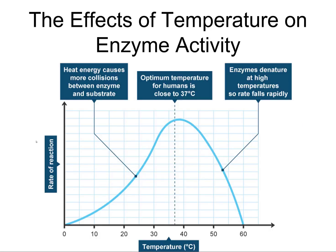Enzymes are like that. The heat energy causes more collisions — the frequency of the enzyme meeting with the substrate gets higher and higher. The molecules are moving around; I equate that with shaking, where molecules of water bump around. As temperature goes higher, the speed of that bumping increases. At some point it gets so frantic that it starts to degrade the enzyme — it starts to fall apart and then denatures. That's the effect of temperature.